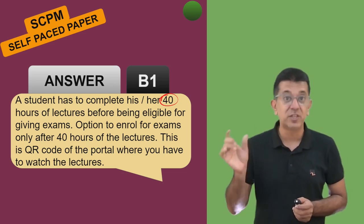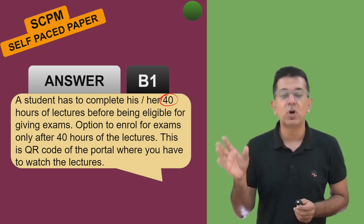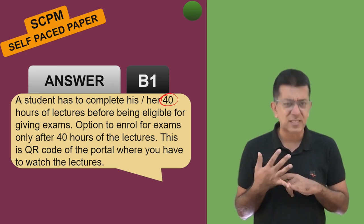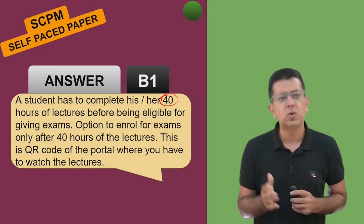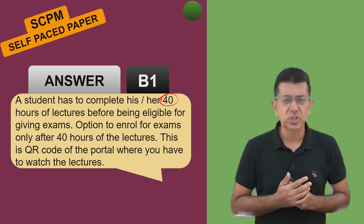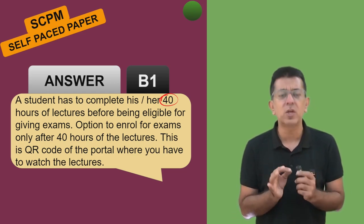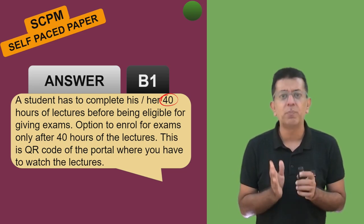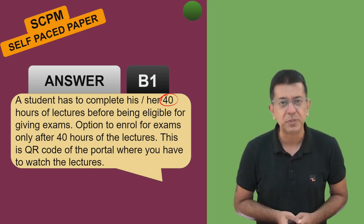The QR code on screen is for the Board of Studies portal where you can log in through your SRO number and date of birth. One advice to every student: the moment you clear your CA Inter, these should be the first things to be done. Try to appear for your self-paced papers as early as possible.